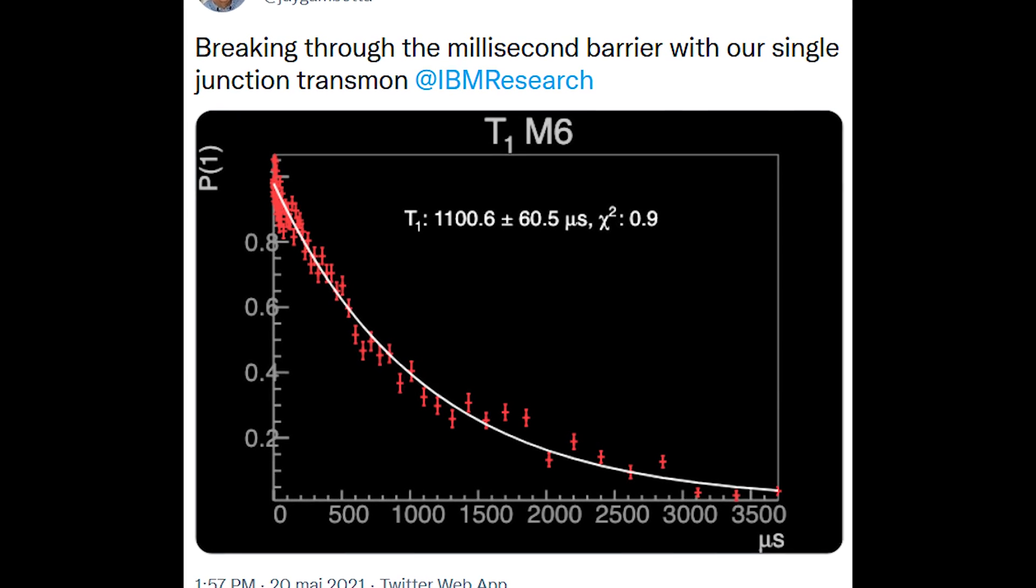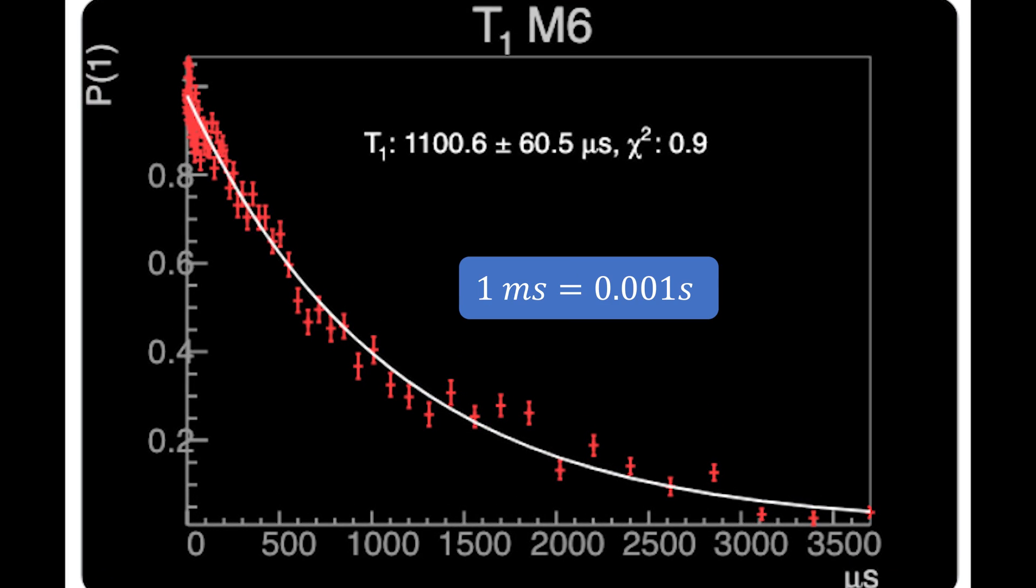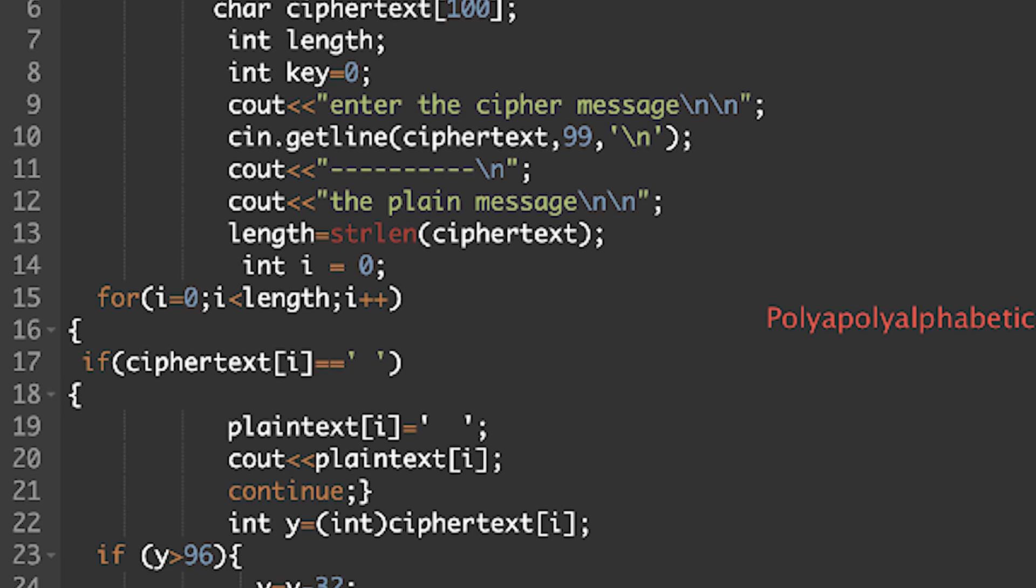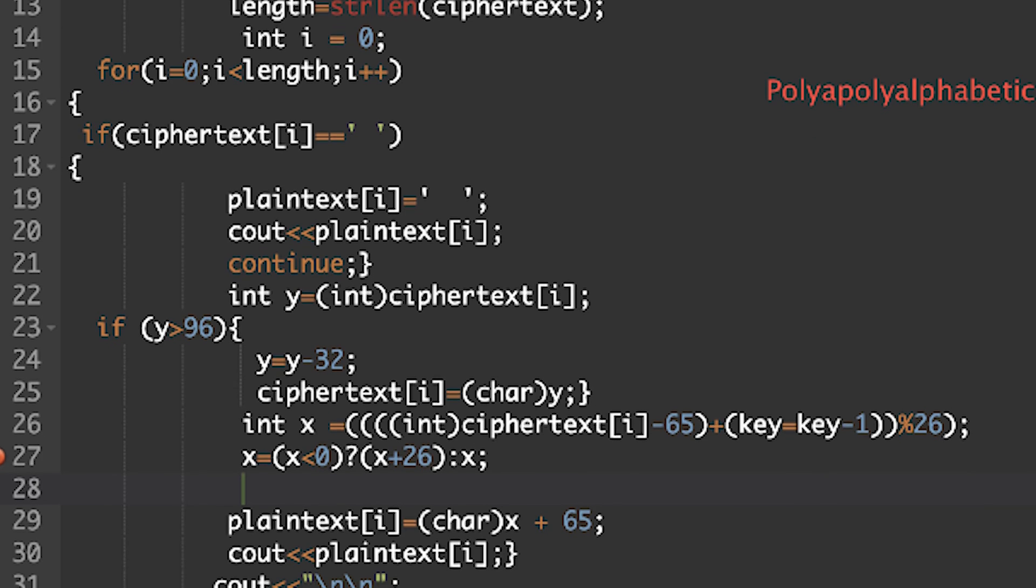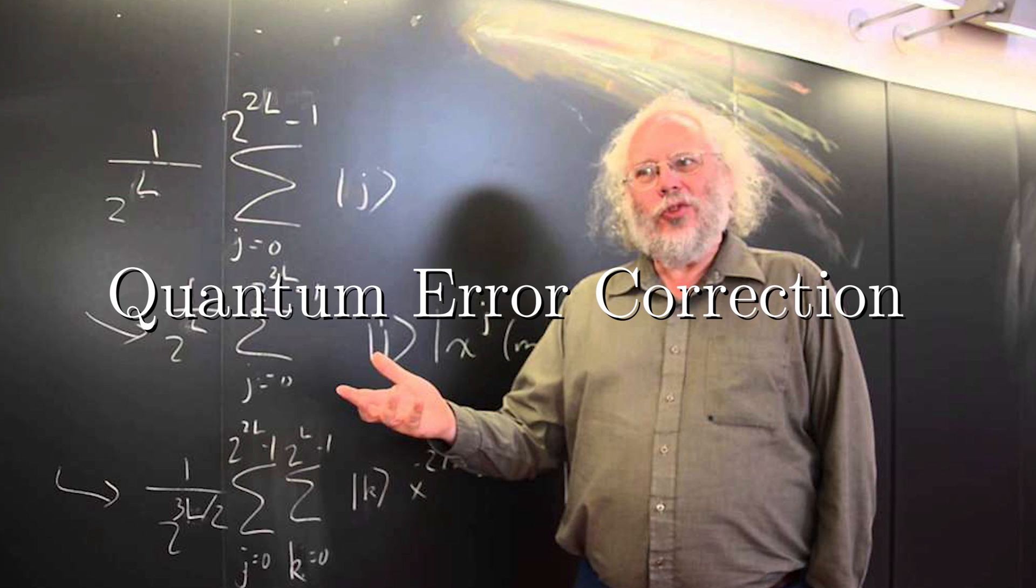The lifetime absolute record of these devices is 1 millisecond, so 0.001 second. You cannot perform a calculation with qubits that only last for 1 millisecond. But this was already anticipated by Shor, one of the fathers of quantum computing, who proposed a magic solution, quantum error correction.